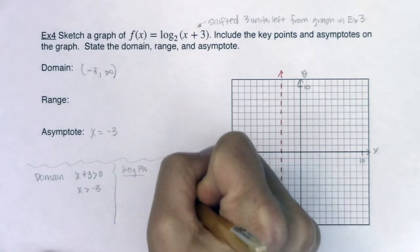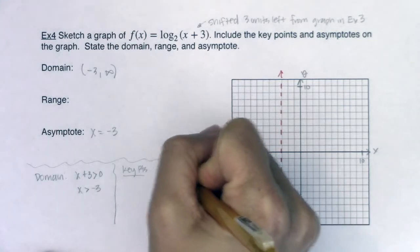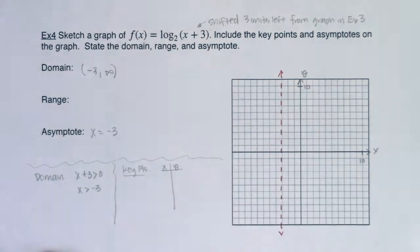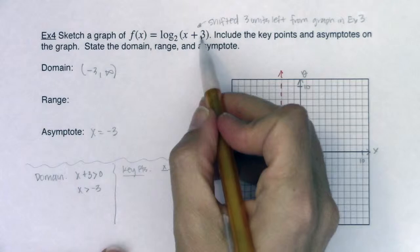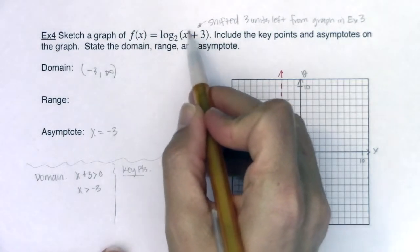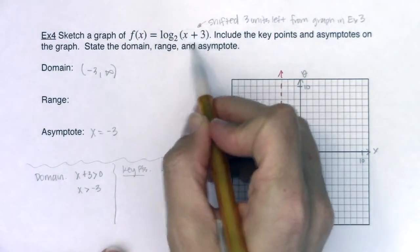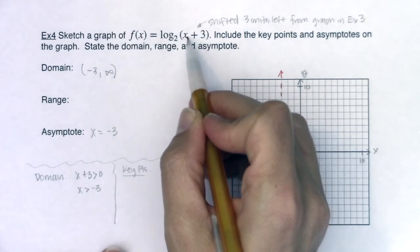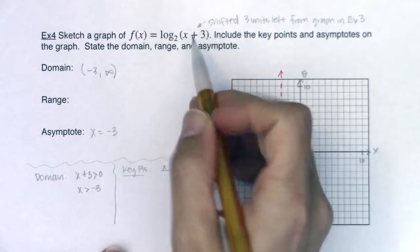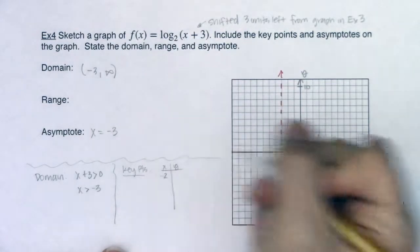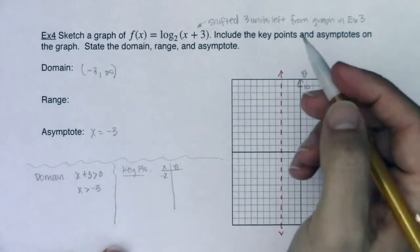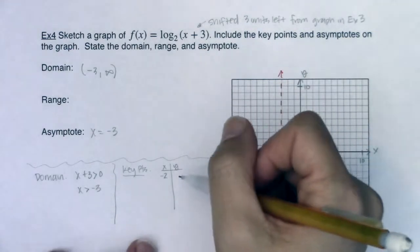Alright, so I'm going to make my little xy table and I'm going to choose points intentionally. So I would like my argument to be 1. That would be nice. If I wanted my argument to be 1, I need x plus 3 to equal 1. So I would want to try when x was equal to negative 2. That would be a nice argument to have. So let's try that.